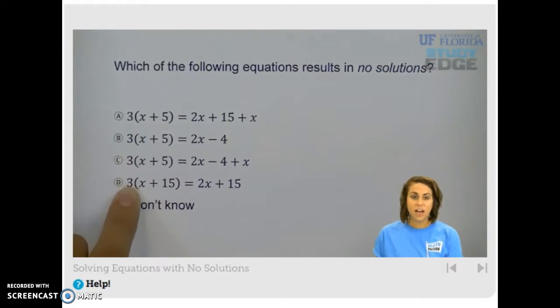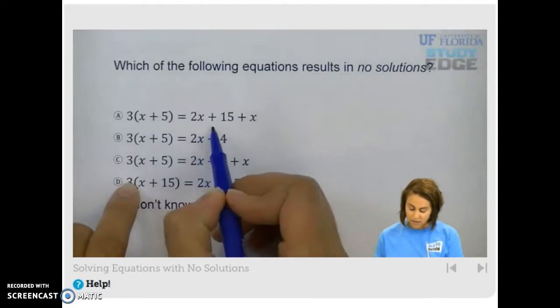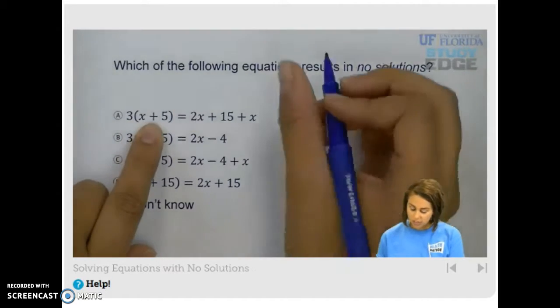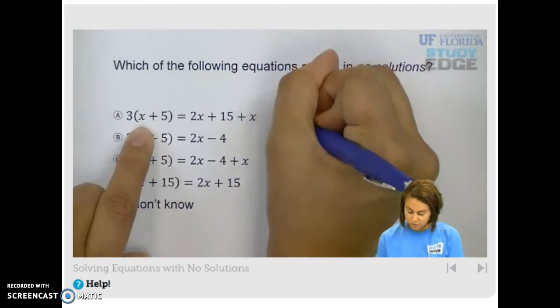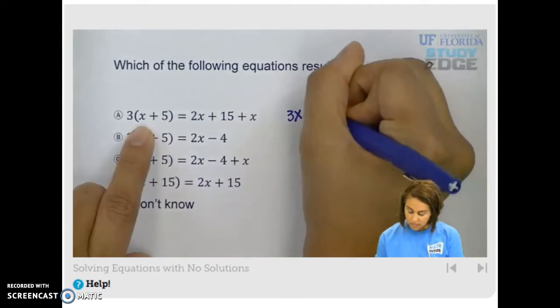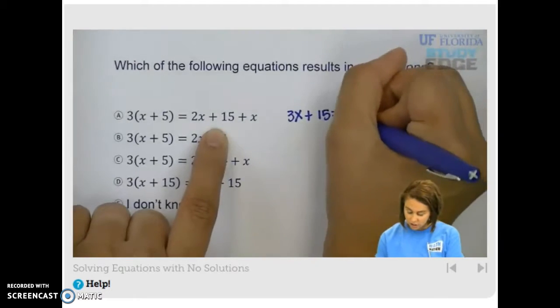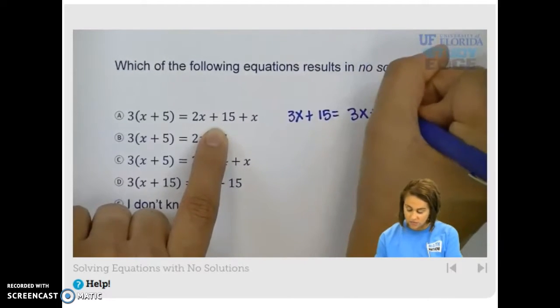So we have 3x plus 5, and on the right hand side we have 2x plus 15 plus x. So we're going to start by distributing. If we distribute, we have 3x plus 15 equals, and can we combine like terms on the right hand side? Sure. 3x plus 15.